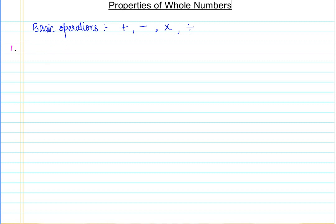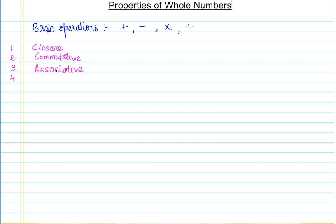The properties we will study are: first, the closure property; second, the commutative property; third, the associative property; fourth, the distributive property; and fifth, the identity property.